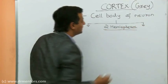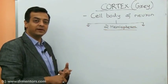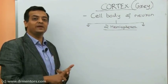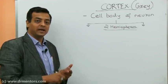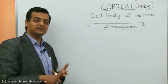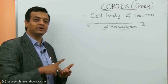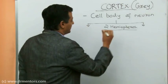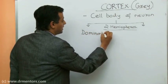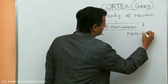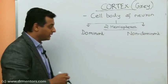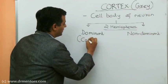Let me keep the clinical thread going. We have a patient in front of us, we have decided it is a pyramidal lesion — an upper motor neuron lesion. Now we need to know whether it is cortical or not, hence we are doing this exercise to understand the anatomy, function, and symptoms related to cortical affection. The two hemispheres include the dominant hemisphere and the non-dominant hemisphere, also called the categorical hemisphere.